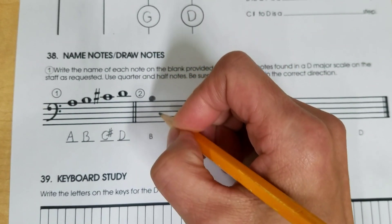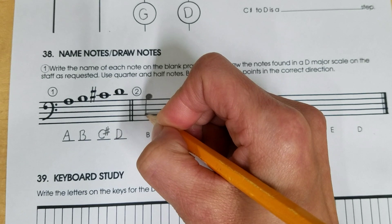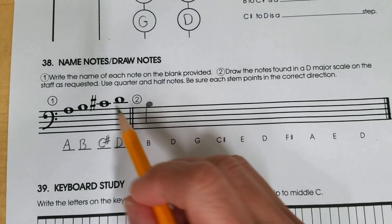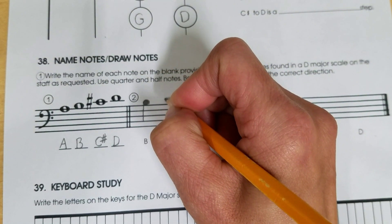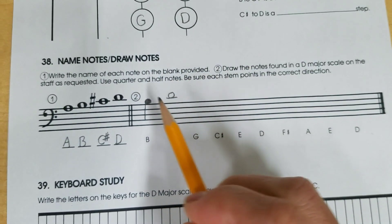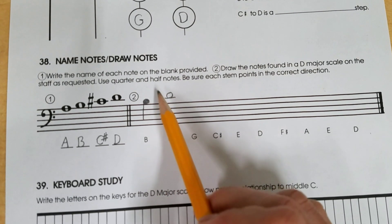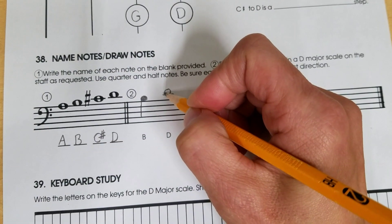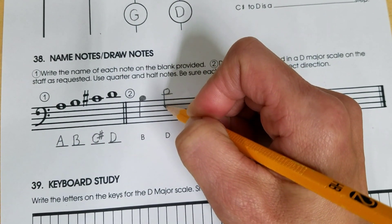The stem for this would go before the note and downwards. Here's an example of high D. I draw a ledger line and sit on top of it. I'm going to do a half note since the directions said use quarter and half notes. The stem for this would go before the note and downwards.